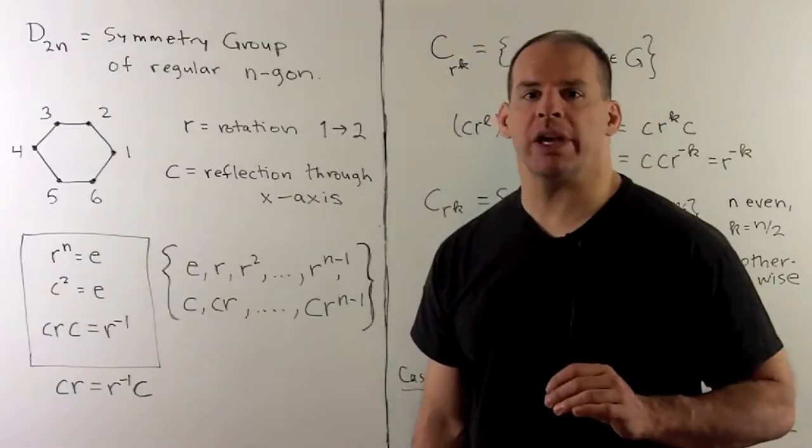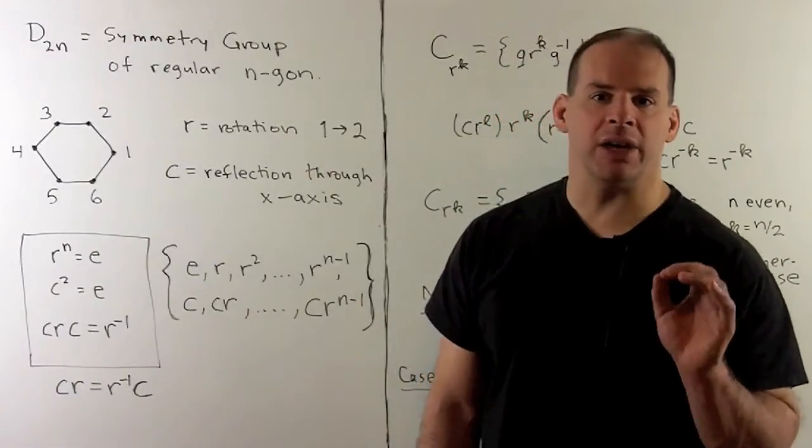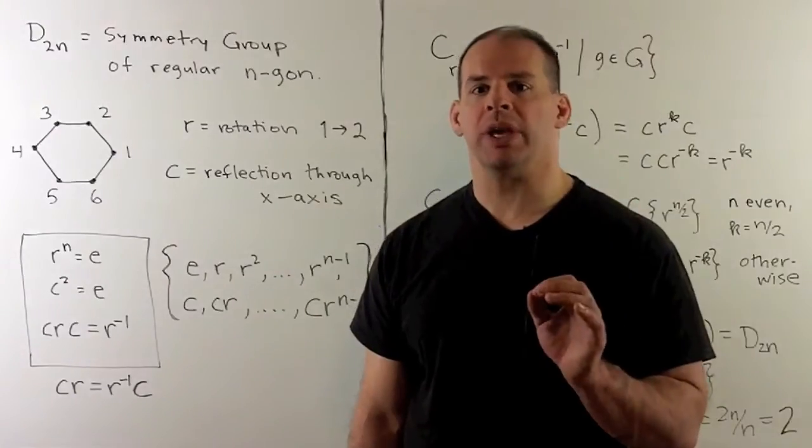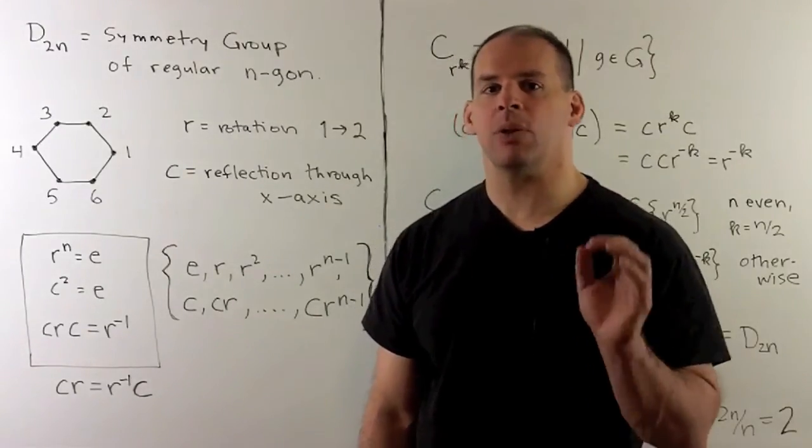For an interesting example of the class equation, let's consider the dihedral groups. As usual, our results split into two cases, when n is even and when n is odd.